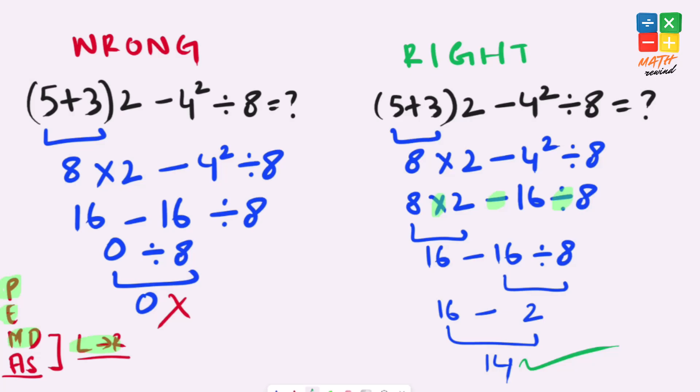Remember always follow the rules, parenthesis first then exponents then multiplication and division and finally addition and subtraction. And if you have both multiplication and division available in an equation, you go from left to right. And if you have both addition and subtraction available in an equation, you again go from left to right.